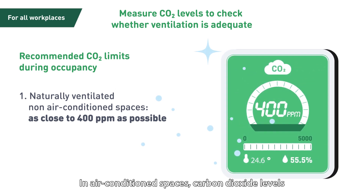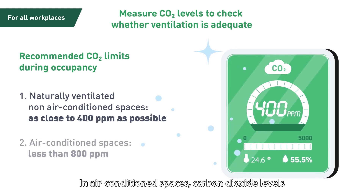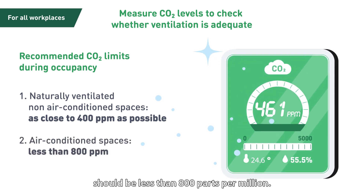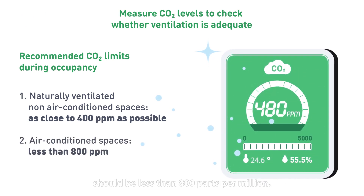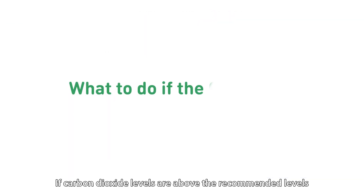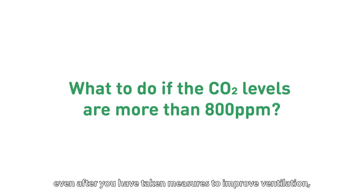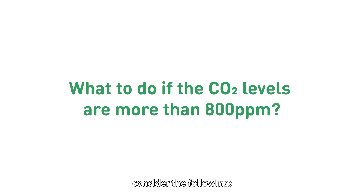In air-conditioned spaces, carbon dioxide levels should be less than 800 parts per million. If carbon dioxide levels are above the recommended levels, even after you've taken measures to improve ventilation, consider the following.